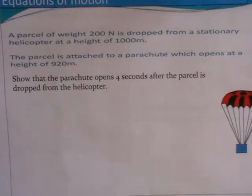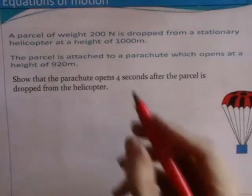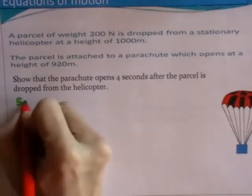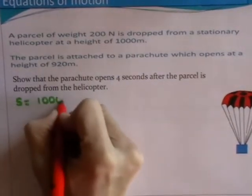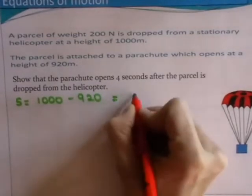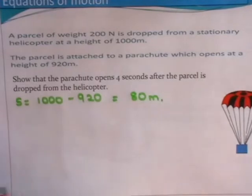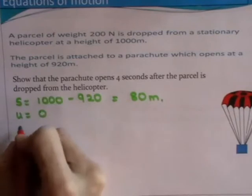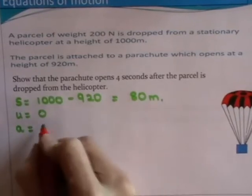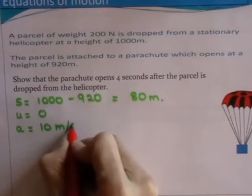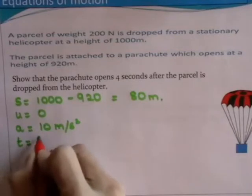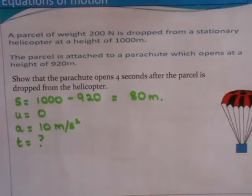So the first thing that we have to do is work out how far the parcel travels before the parachute opens. The distance traveled is 1000 minus 920, so that's a distance of 80 meters. We know that its initial velocity u is equal to zero. We know that it's got an acceleration due to gravity, which is 10 meters per second squared. And the last thing that we are looking for is time, and we're hoping that our answer will come out as four.